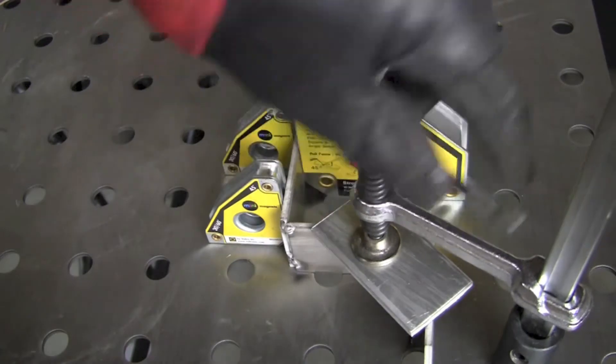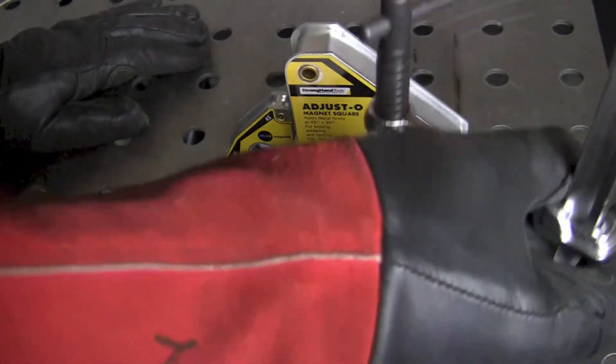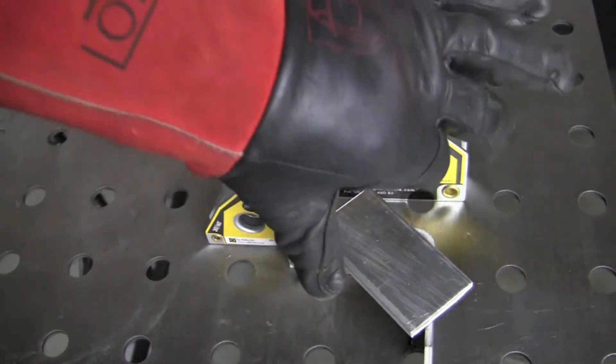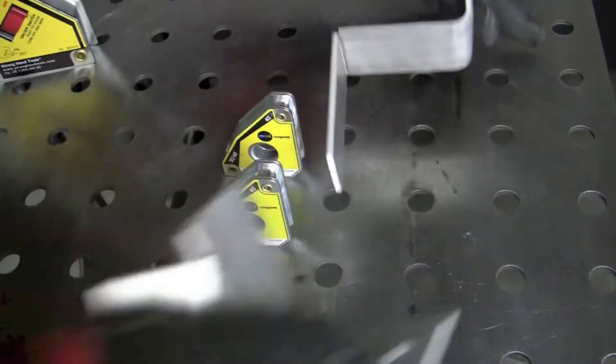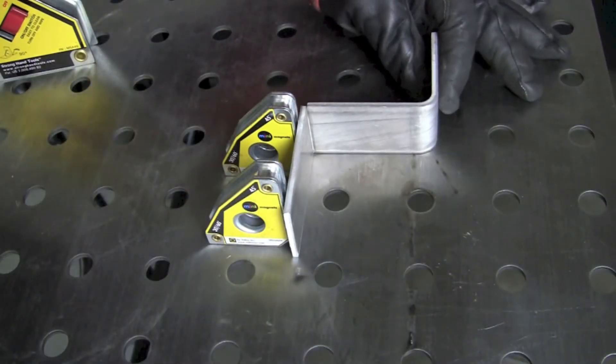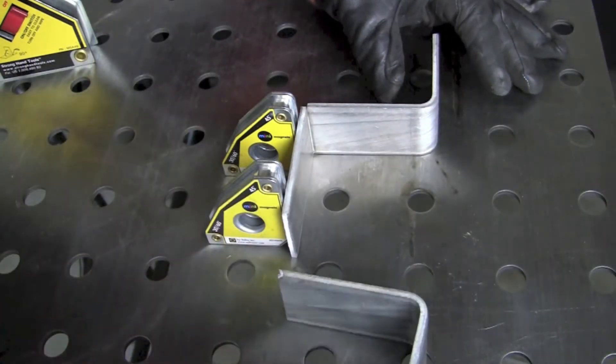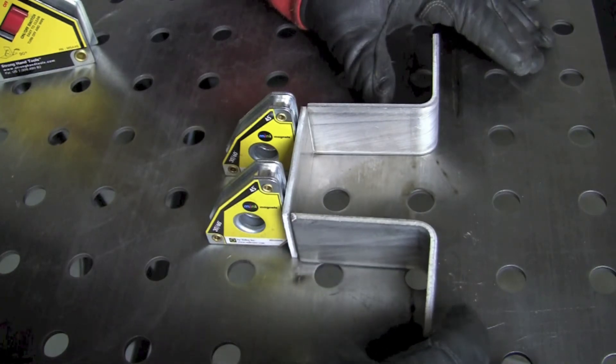Then I went ahead and removed the clamp so that we could move on to the next operation. So with the first side tack welded on there I decided to flip it around and get the other side into alignment there.